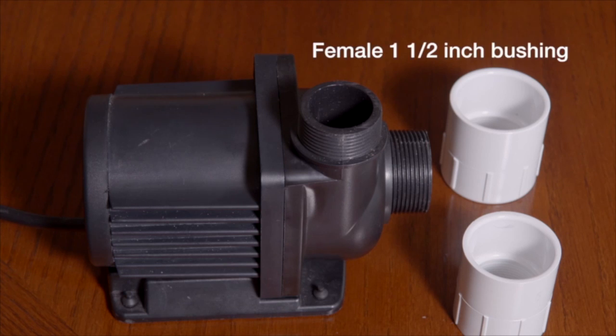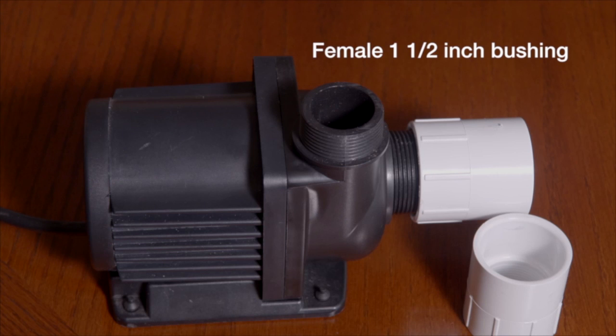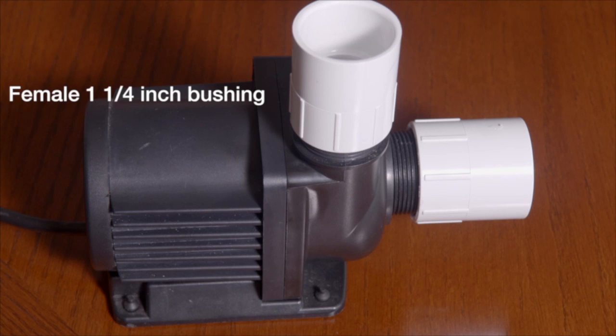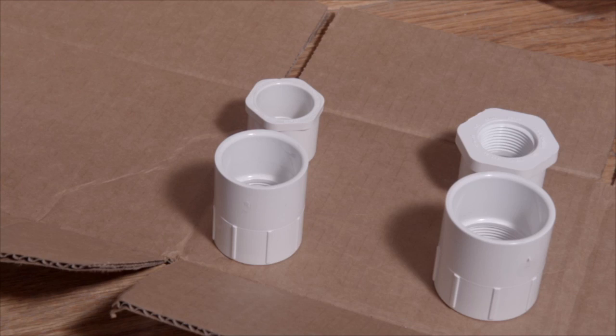To plumb this Waveline 10,000 for PVC, you will need a female 1.5 inch bushing for the intake, and a female 1.25 inch bushing for the top output. I use adapters to get from the sump to the pump and up again.